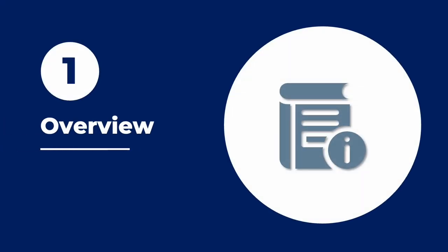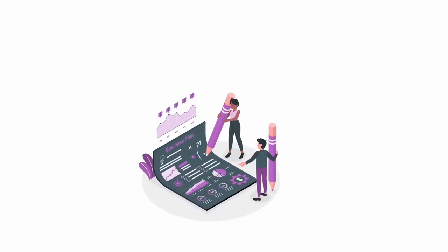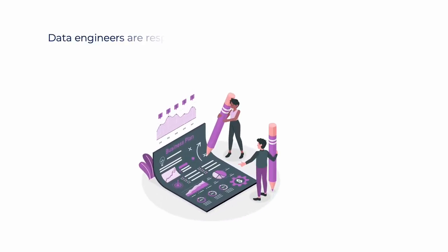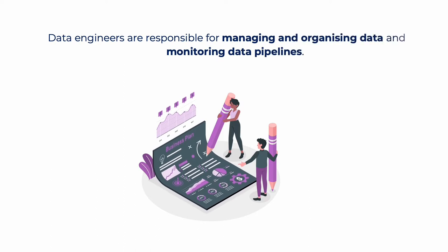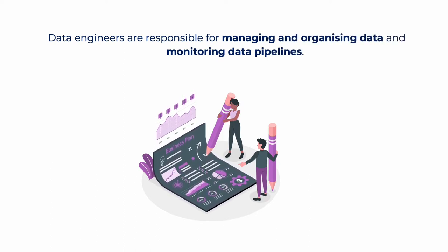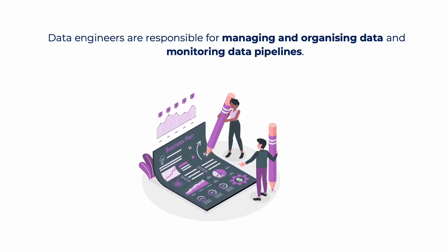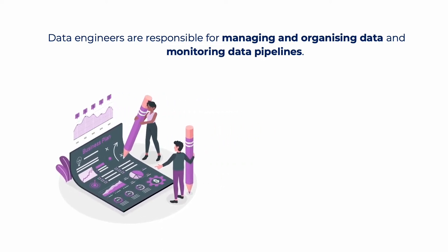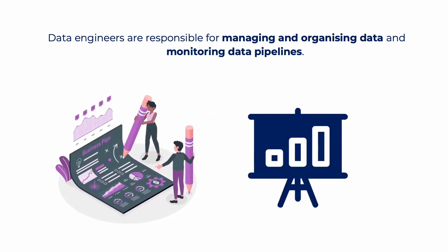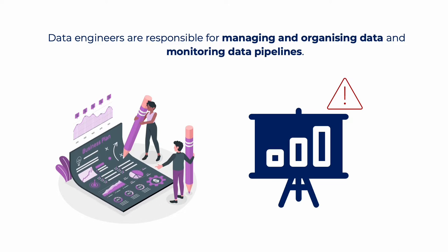Let's start with the general overview of Torch. Assume you have a team of data engineers whose primary responsibility is to manage and organize data, as well as monitor data pipelines that have a direct impact on your business objectives. Data engineers are the ones who provide information to make data-driven decisions, and if they provide really poor quality data, this will impact the decision making. So this is where Torch enters the picture.